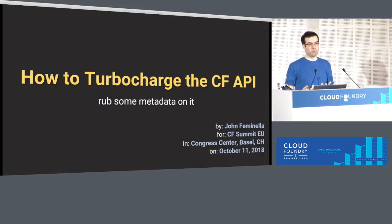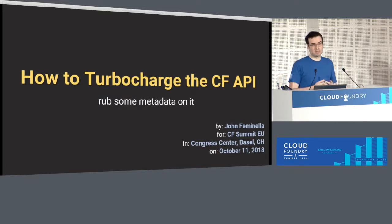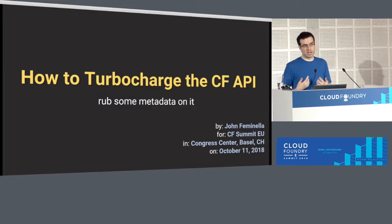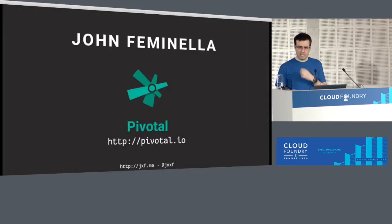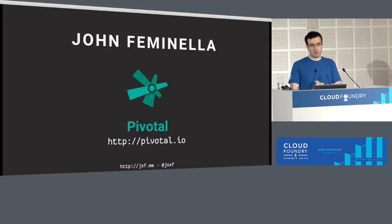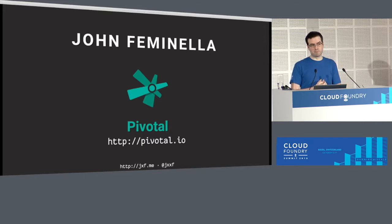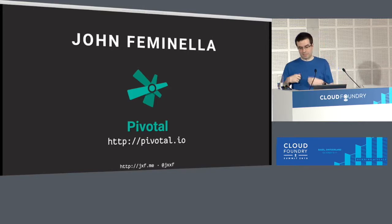The problem is: how do you understand meta information about those applications? Not just what's deployed, but the properties, the interesting facts about the application. How can you ask the system what's true about some set of applications? I'm John Faminella, an advisor for Pivotal. I work with mostly financial services and insurance clients, mostly in the Americas, but we have a pretty broad portfolio of folks.